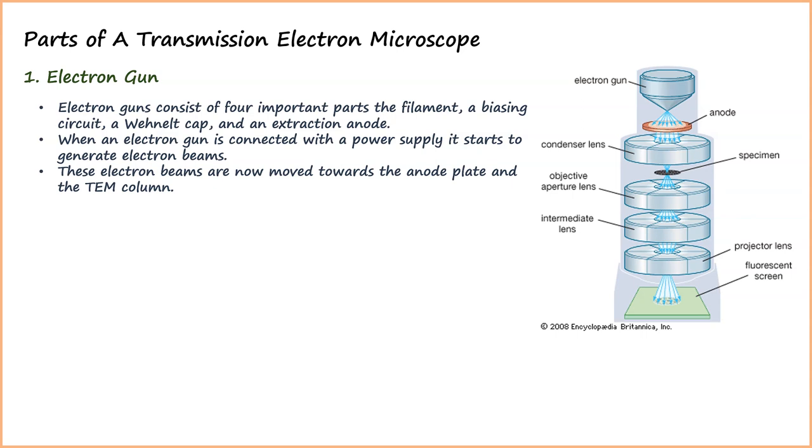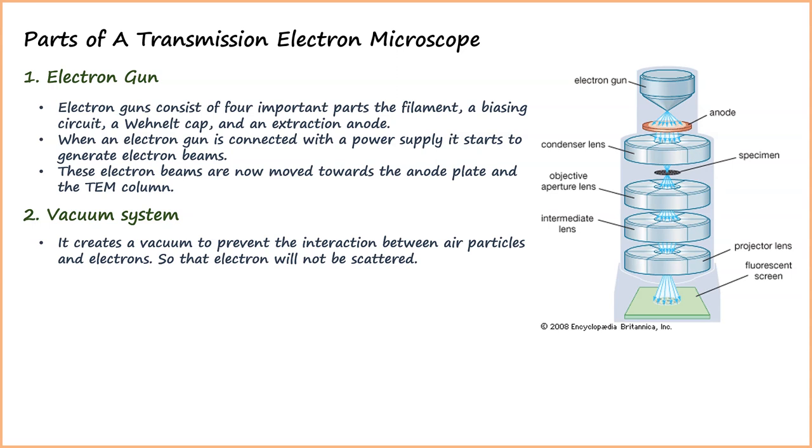The next part is the vacuum system. It creates a vacuum to prevent the interaction between air particles and electrons, so that electrons will not be scattered.